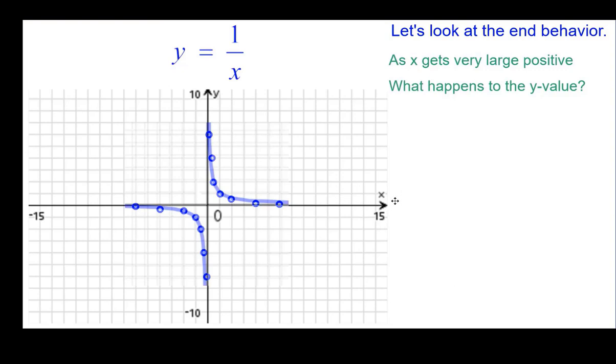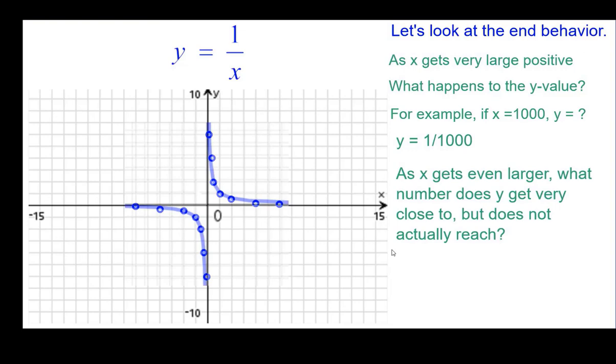For example, if x was a thousand, y would be one one-thousandth. So we'd go way out a thousand and go up a little bit, one one-thousandth.